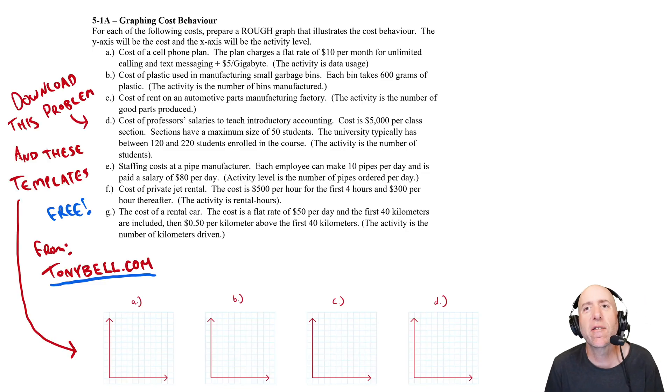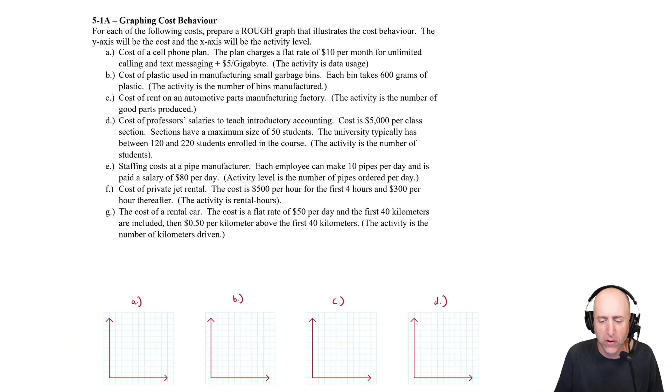Let's work through problem 5.1a. This has to do with graphing various costs. Students actually struggle with this topic quite a lot when I test on it, and it can be a little tricky, but let's work through this together and see how we do. For each of the following costs, prepare a rough graph that illustrates the cost behavior. The y-axis will be cost and the x-axis activity level. This is a very normal thing to do in a management accounting class, just figure out what costs look like.